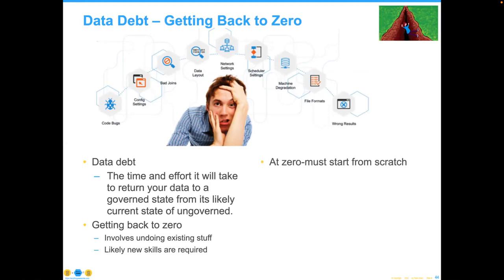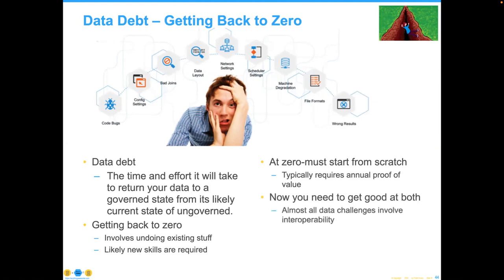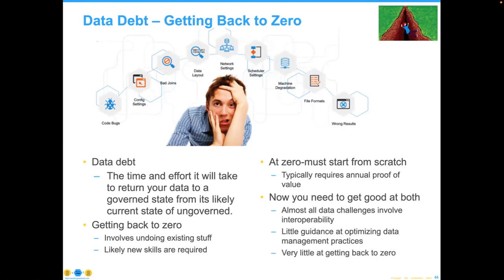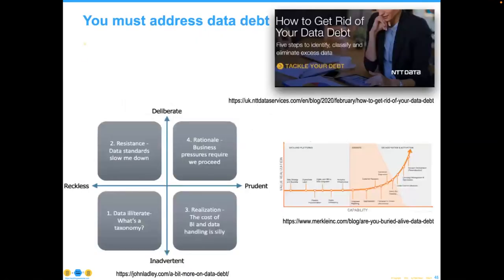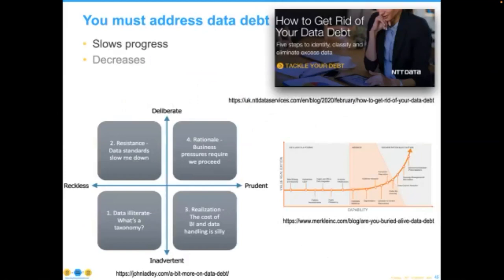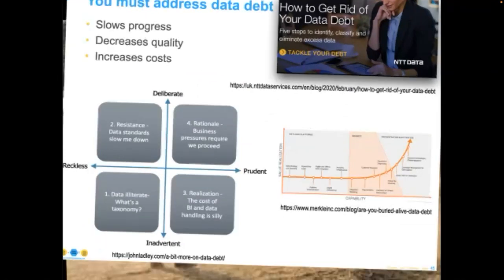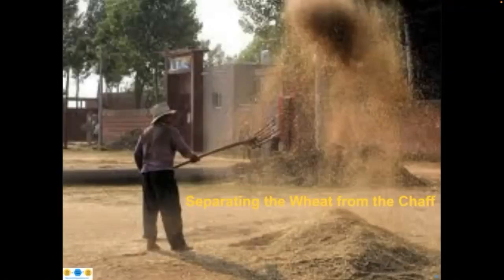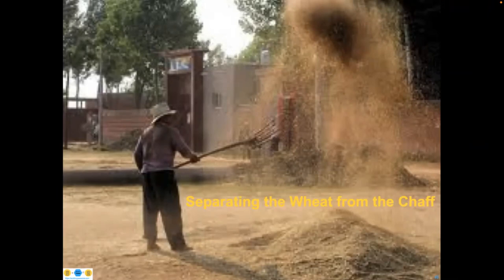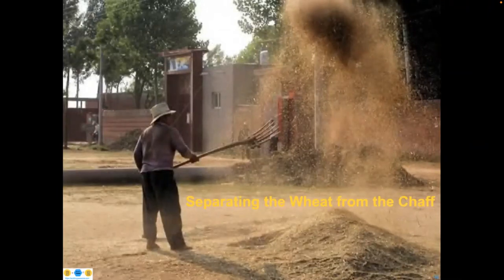Data debt is the time and effort it takes to return your data from its current state to whatever you'd like it to be. I call it getting back to zero — then you can really do the fun stuff. It generally involves undoing existing work that you probably don't have the skills to undo and redo, and it typically requires an annual proof of value. Data debt slows progress, decreases quality, and increases our costs all the way around.